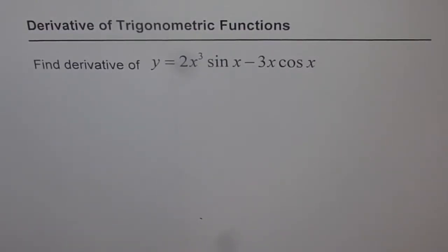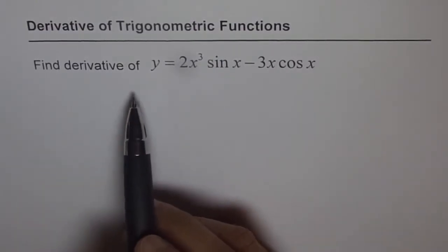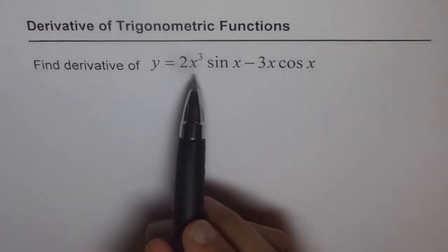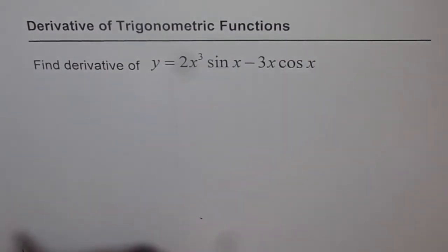Derivative of trigonometric functions. Find the derivative of y equals 2x cubed sin x minus 3x cos x.